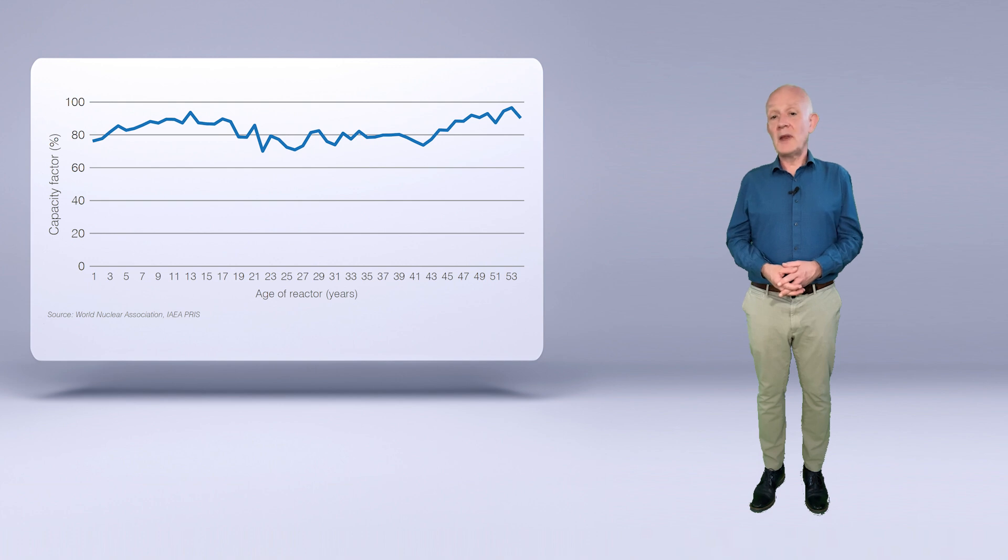There is no age-related decline in nuclear reactor performance. Indeed, higher-than-average capacity factors have been achieved by reactors exceeding 45 years of operation. This continued high level of performance regardless of age is a positive indicator when considering how long a reactor can be expected to operate. Operators are now routinely considering running reactors for 60 to 80 years or more. Given that the average age of the global nuclear fleet in operation today is around 32 years, the nuclear fleet is relatively young.